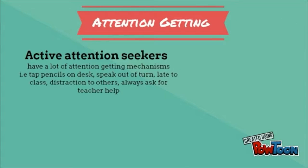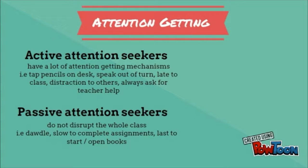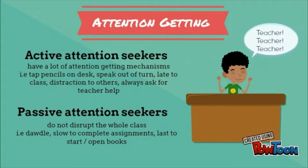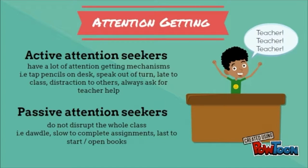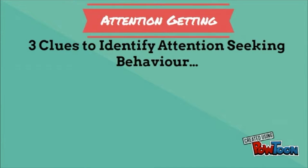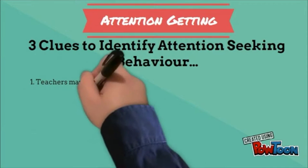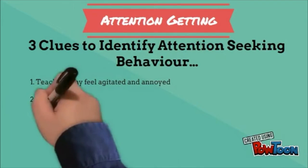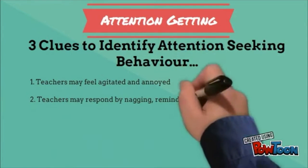The first type is attention getting. There are two types of attention seekers: active and passive. An active attention seeker displays a lot of attention-getting mechanisms — for example, a student may tap their pencil on their desk, speak out of turn, or ask for the teacher's help. A passive attention seeker does not disrupt the whole class, but may dawdle or be slow to complete assignments, and is the last one to open their books.